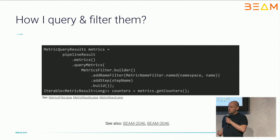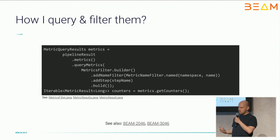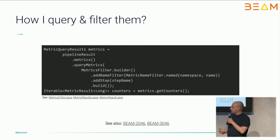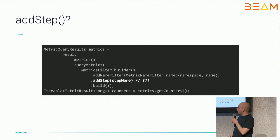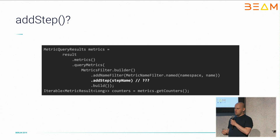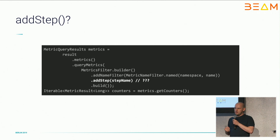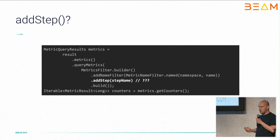After you've collected all your metrics, you can gather them. You get your metrics from a pipeline result and apply a series of filters in a metrics query. Here we're filtering by namespace and name to get all metrics with the same namespace and name. But what is AddStep doing? Underneath in BIM, metrics are collected per each step in special metrics containers. If you don't specify the AddStep filter, you will get all metrics for all steps in the pipeline, which may or may not be what you want.